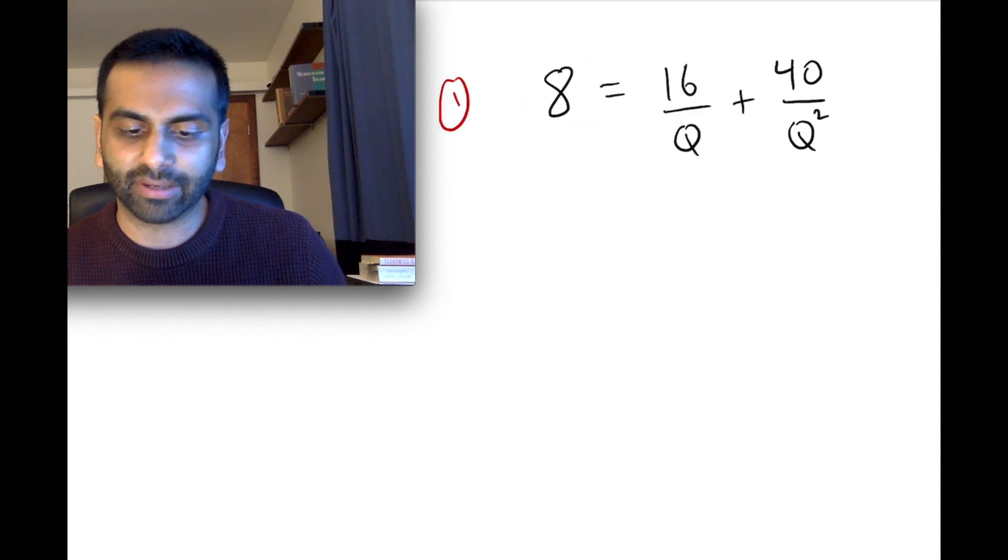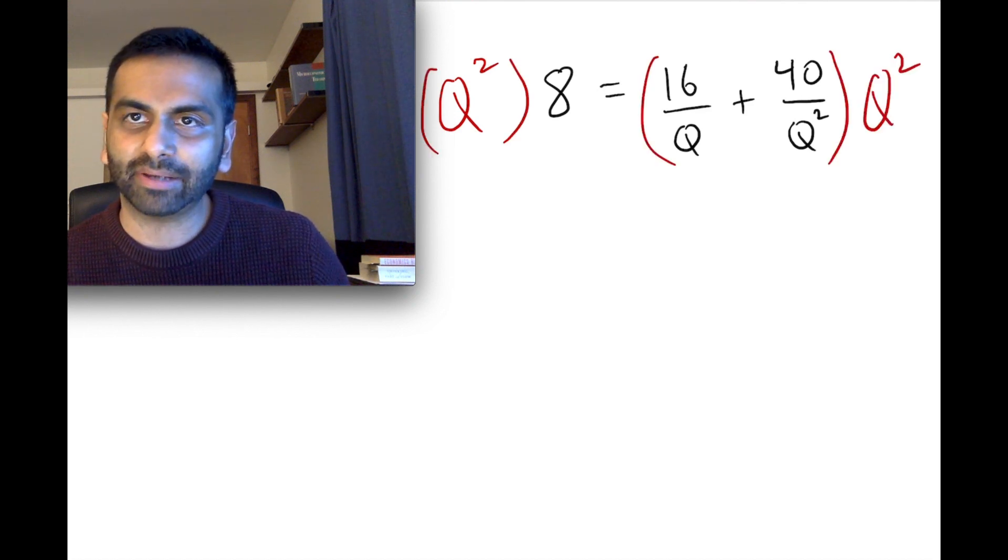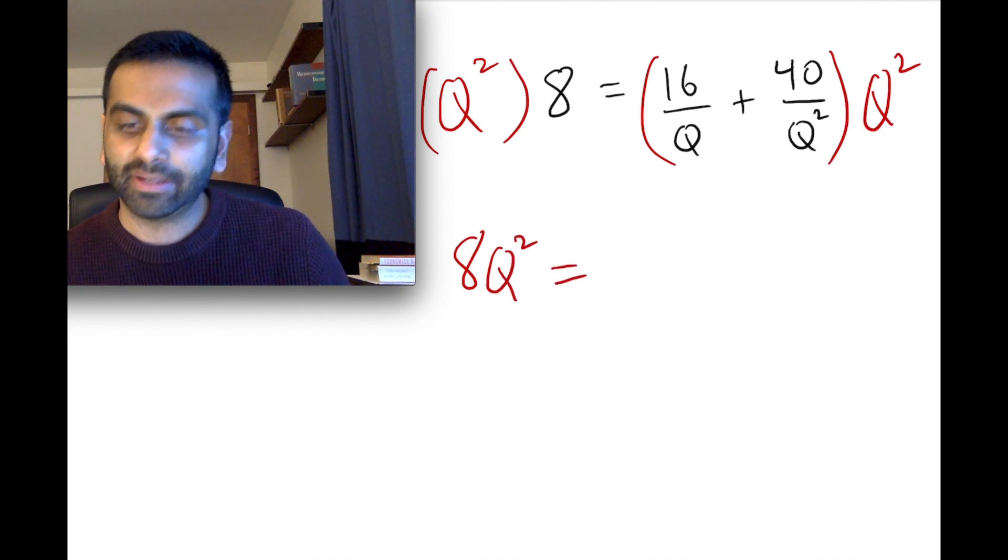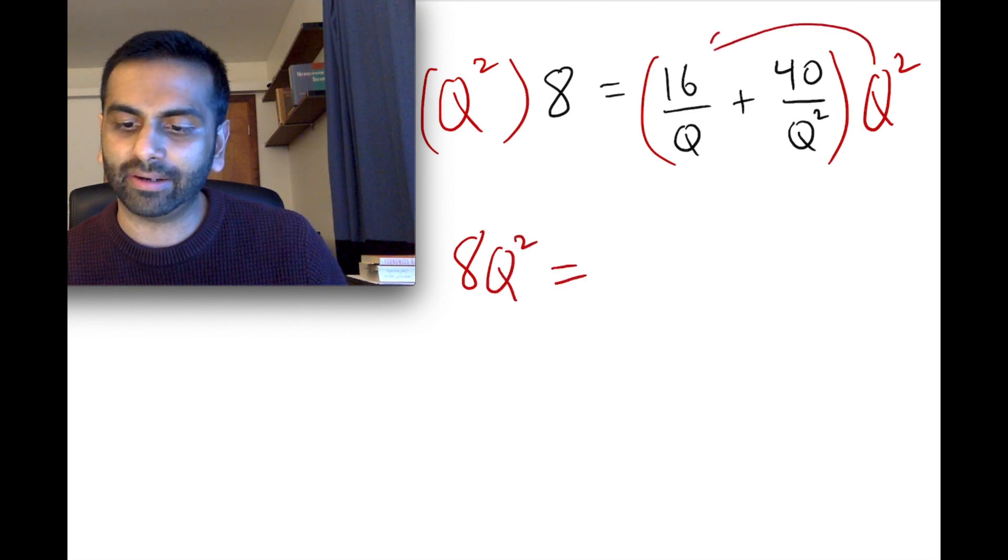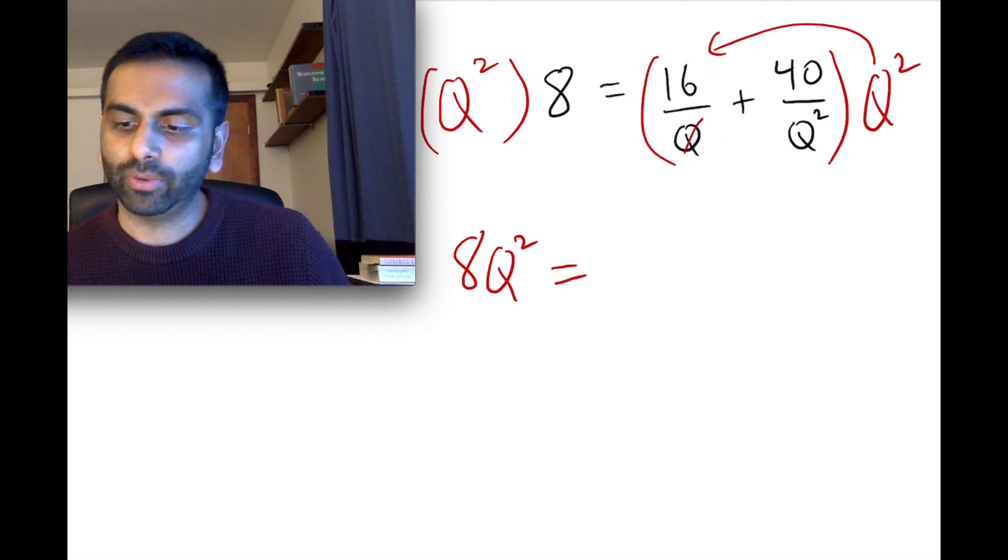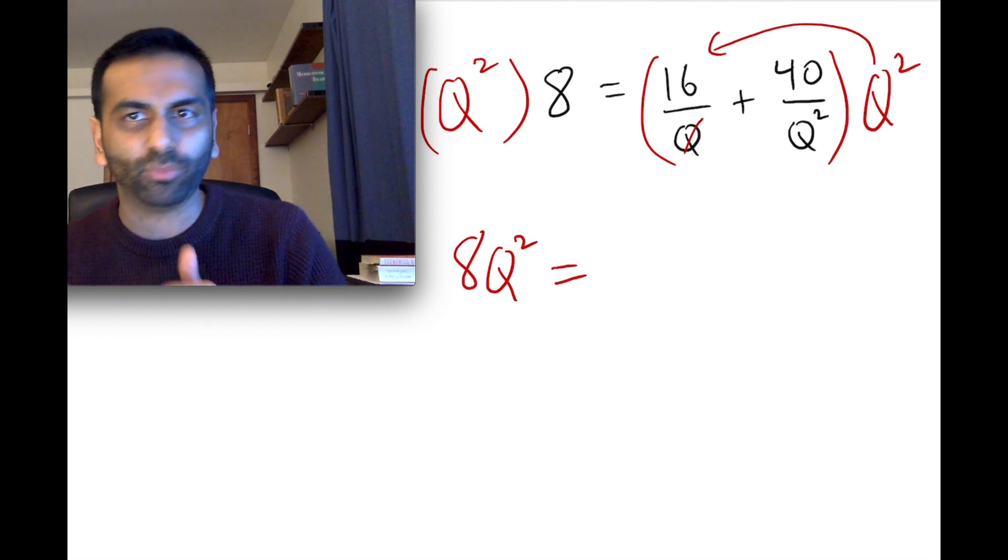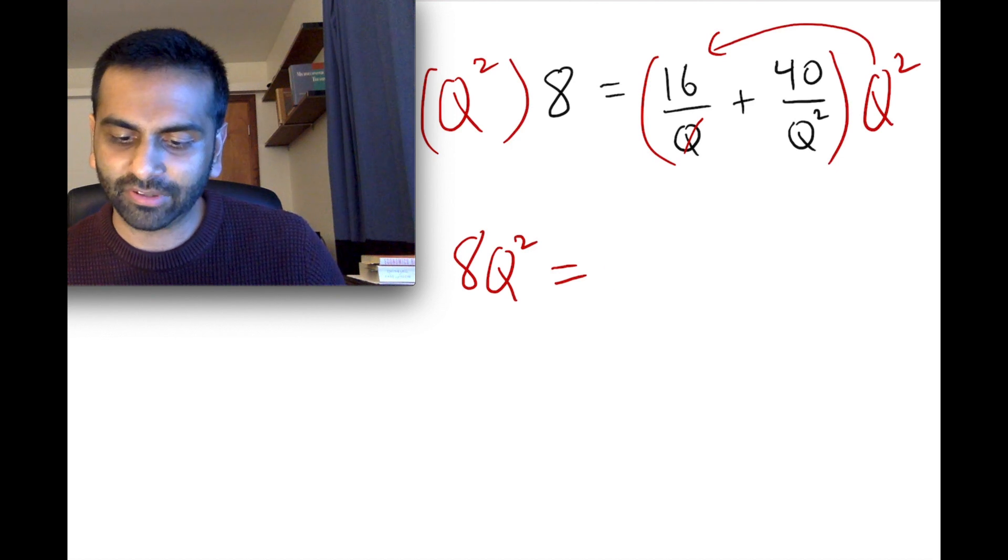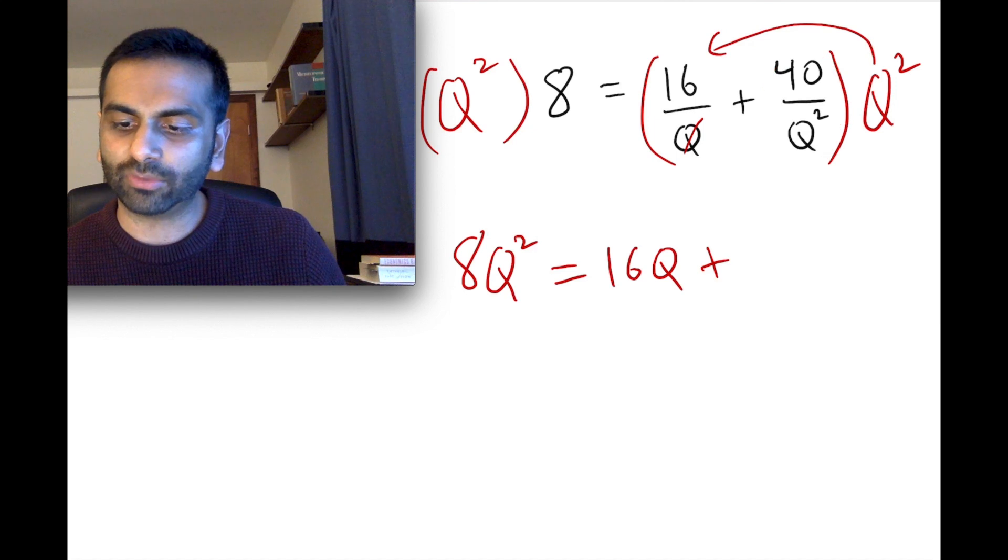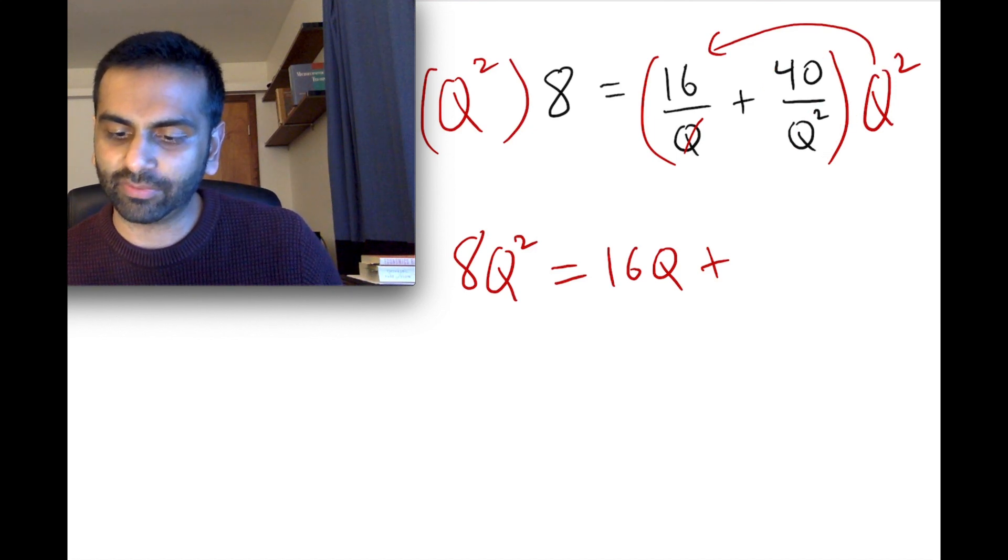So the left-hand side is pretty easy. 8 times q squared. So q squared multiplied left, and q squared multiplied on the right. So the left is just going to be 8q squared. And on the right, it distributes. So the q squared times this first term, the q on the bottom will cancel with one out of the two q's on top. Because the q squared is q times q. So one of them will cancel at the bottom. So you're just left with one of the q's. And here, 40 over q squared, the q squared just cancels completely. So you're just left with the number 40.